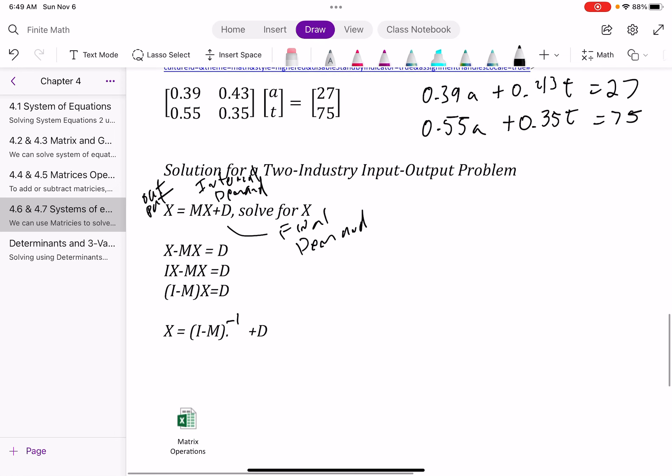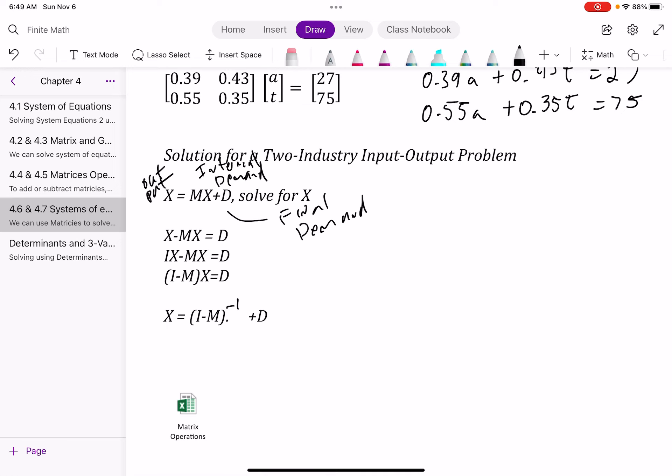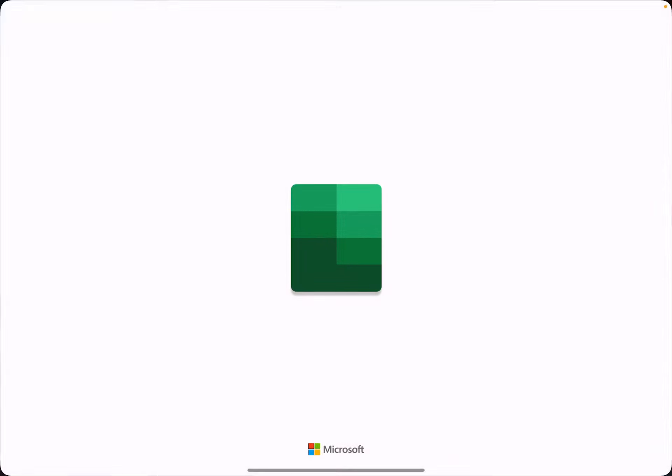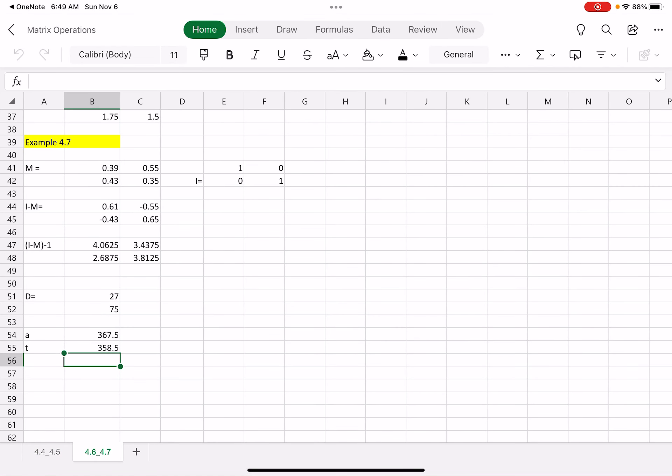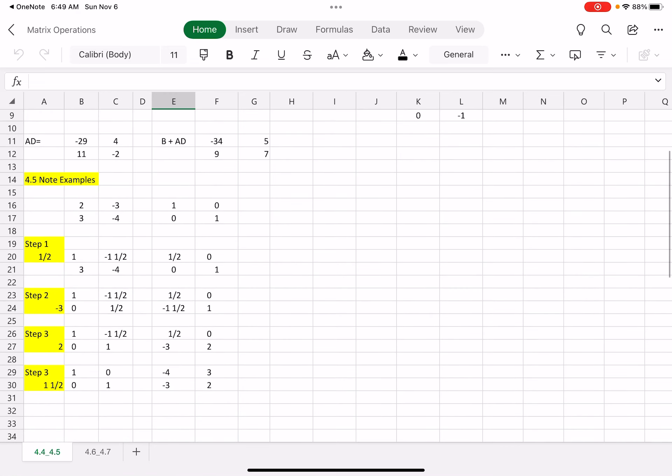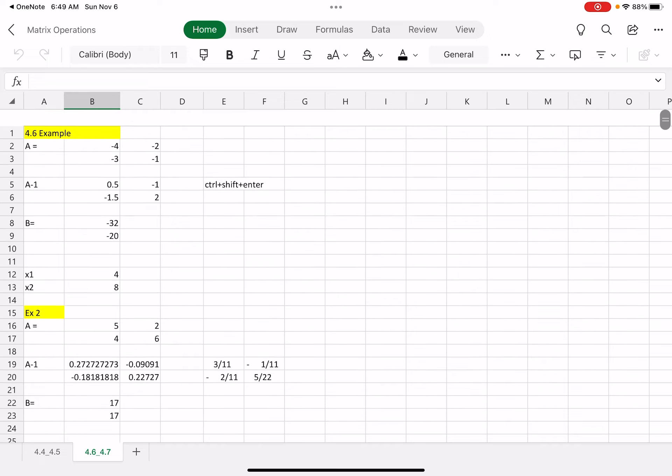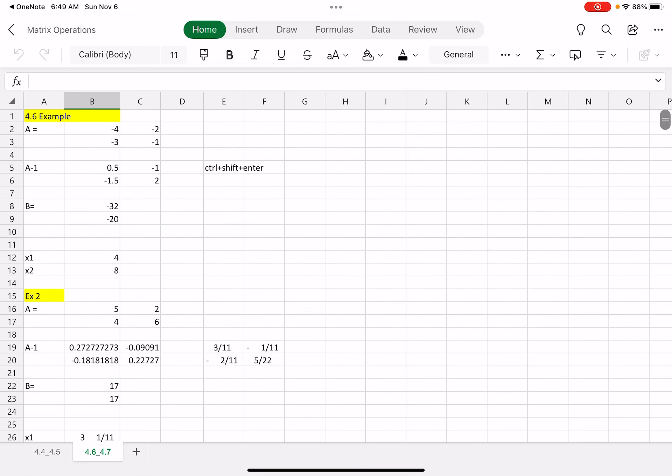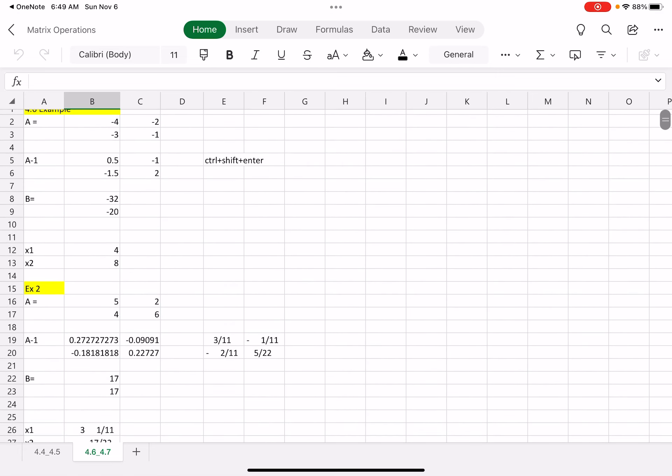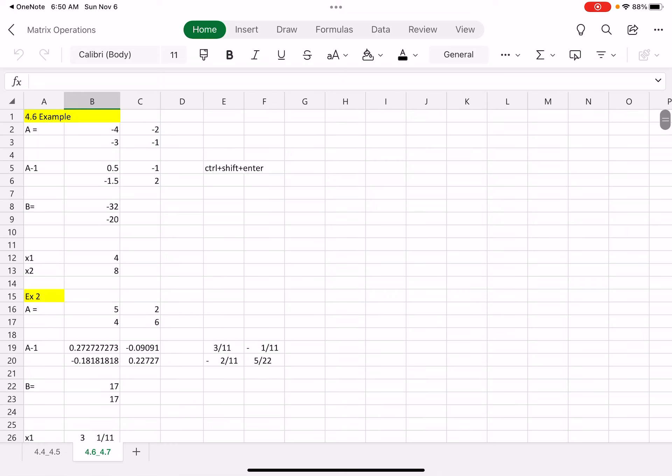And then we can basically solve it this way. So what I've done here is we're going to open up our Excel again. And so you can see I put some 4.5 in here. So you can see those different ones that we did in 4.5. And then here's the problems I did here in 4.6. And this is where I created my identity matrices and did out all the calculations so you can review this.